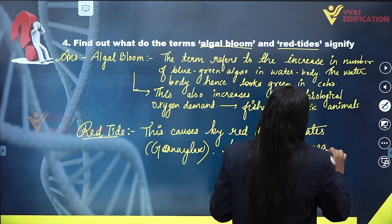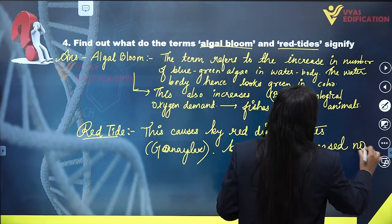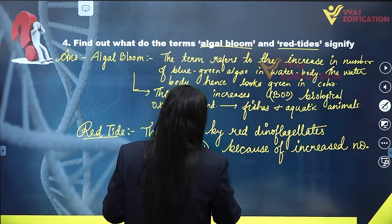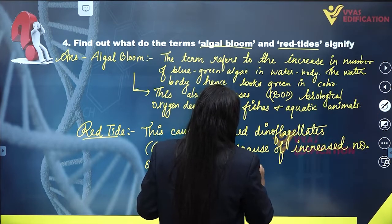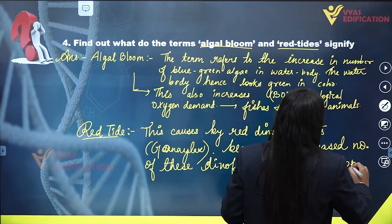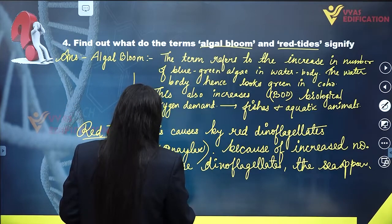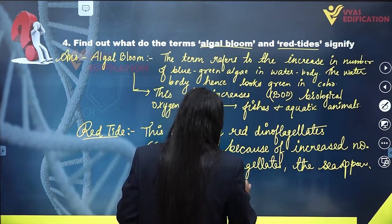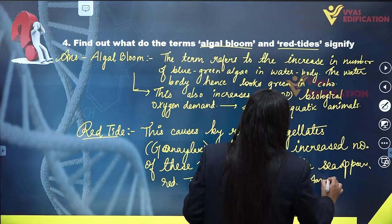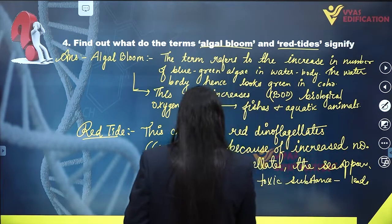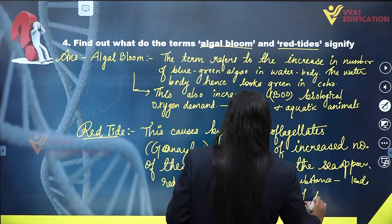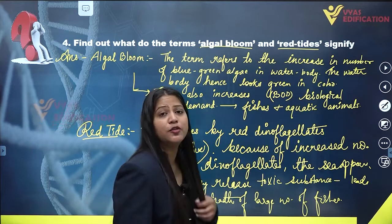Increased number of these dinoflagellates causes the sea to appear red, because the dinoflagellates are red. They release toxic substances into the sea, which leads to the death of a large number of fishes and other aquatic animals present in that sea.